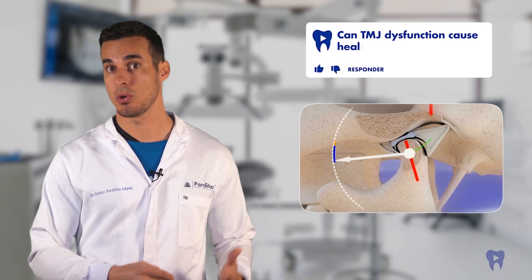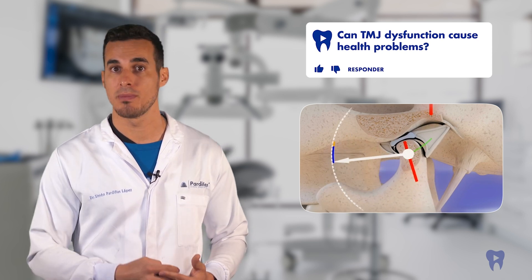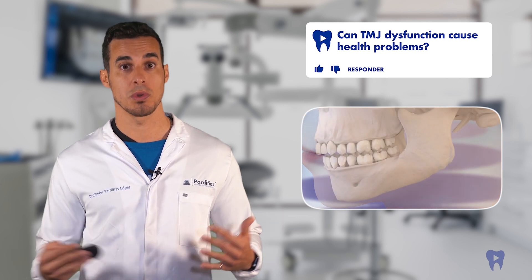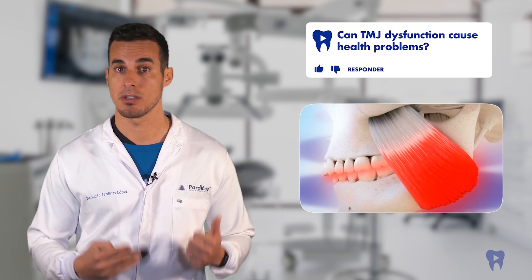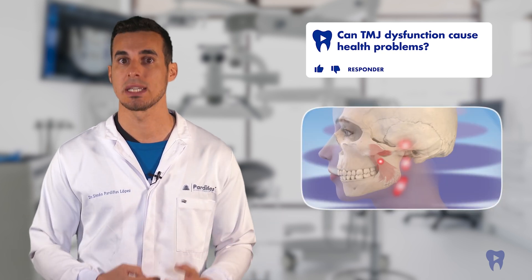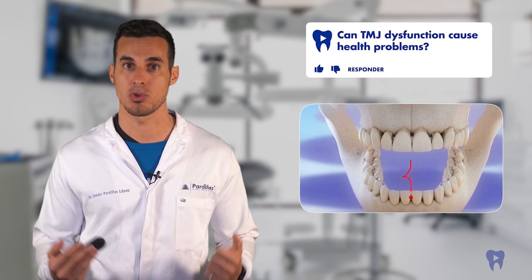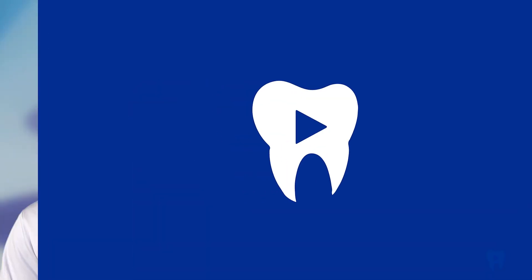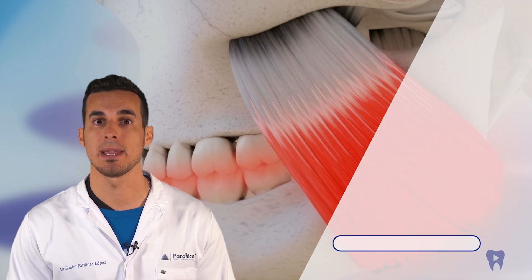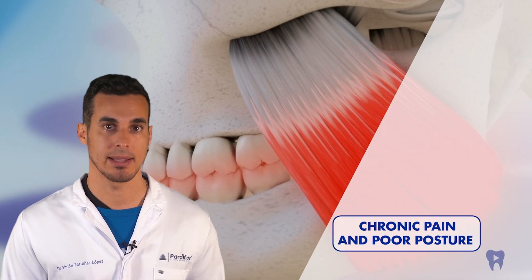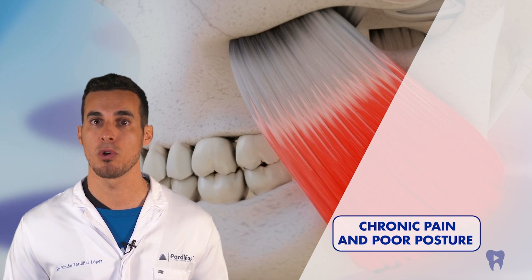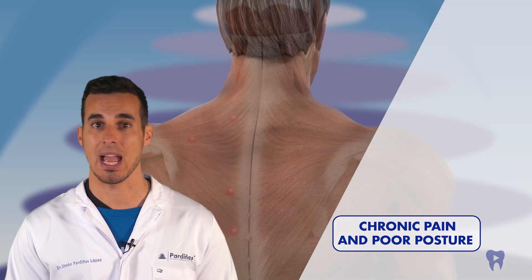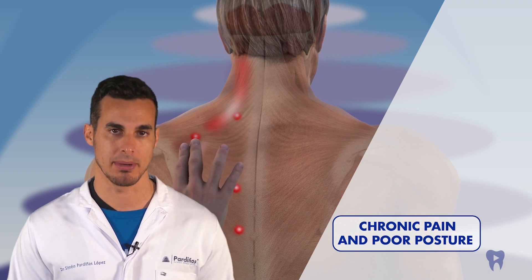The temporomandibular joint, or TMJ, allows movement of the jaw and actions such as eating, chewing, and speaking. Malocclusion, facial asymmetries, bruxism, or cervical disorders can cause TMJ dysfunction, which in addition to complicating jaw movements can lead to other problems. TMJ disorders often cause pain and tension in the jaw, which can radiate to the head, neck, and back. This can lead to poor posture and muscle tension in other areas of the body, exacerbating posture problems and chronic pain.